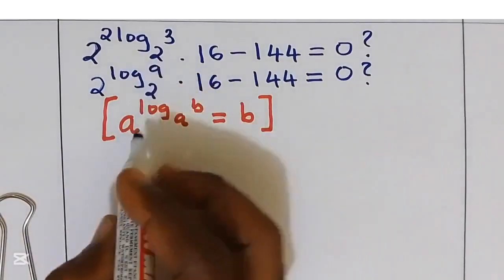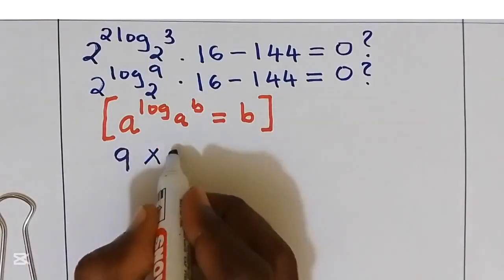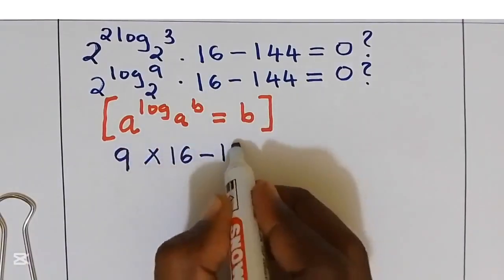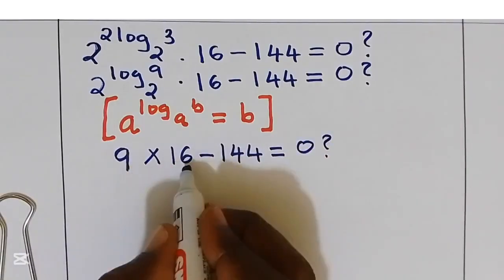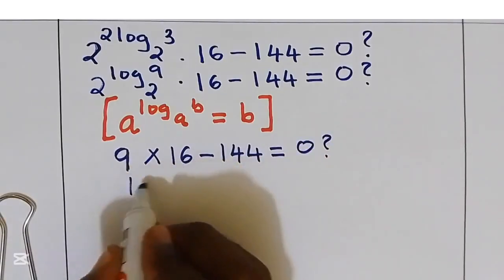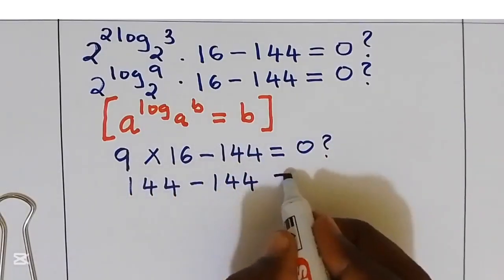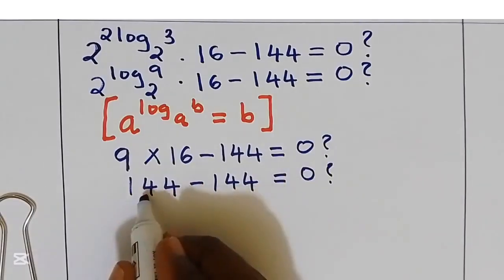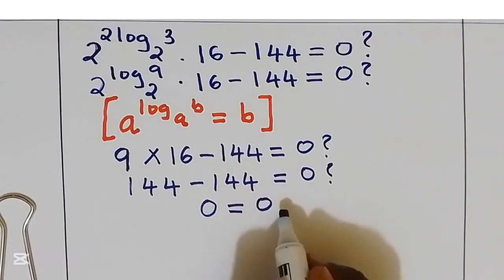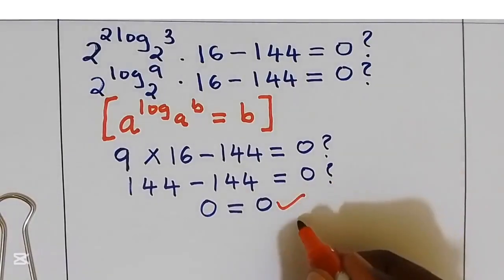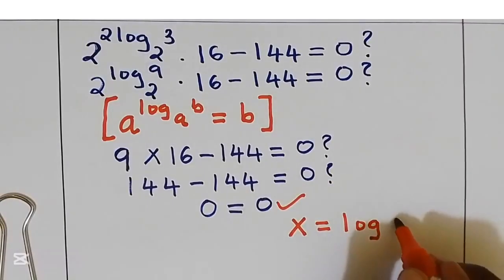So we now have 9 multiplied by 16, take away 144. 9 multiplied by 16 gives 144, minus 144, which equals 0. So 0 equals 0 — this is correct. Therefore, the value of x is equal to log base 2 of 3.